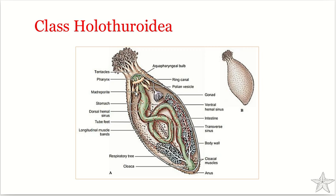You can see the ring canal and the sac-like polian vesicles. The radial canals along with tube feet — with suction cups and ampullae — run between the oral and aboral poles. The tube feet are arranged along the radial canals, running from the oral to the aboral region.